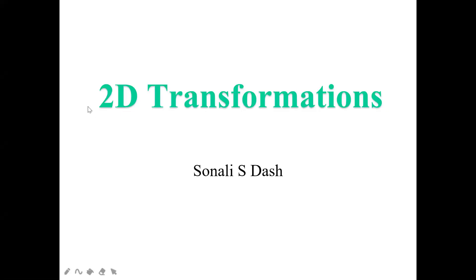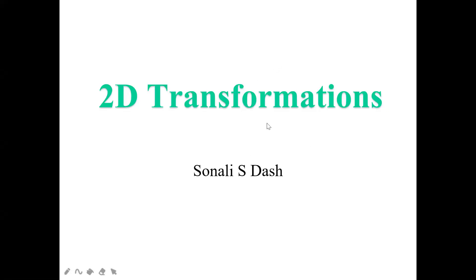When you apply this transformation on a two-dimensional object, it is known as 2D transformation. If you apply any change on a three-dimensional object, that is known as 3D transformation. The mechanism of both 2D and 3D transformations is the same — in 2D you use x and y coordinates, and in 3D you use x, y, and z coordinates.